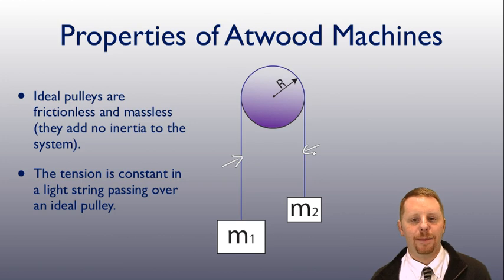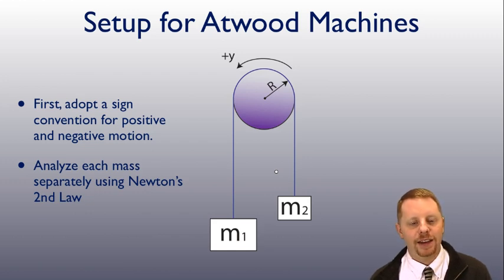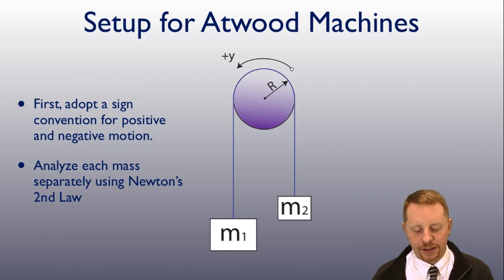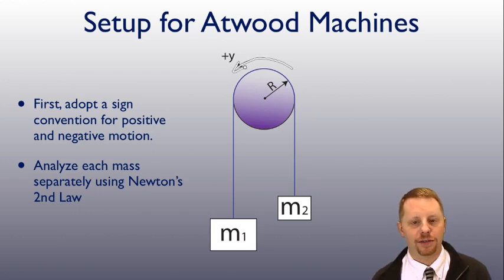So, how do you set up these kinds of problems? Well, the first step is to decide a direction you want to call positive. And because you've got one object moving up and one moving down, what I like to do is I like to pick one consistent direction like we have here and call that the positive direction.